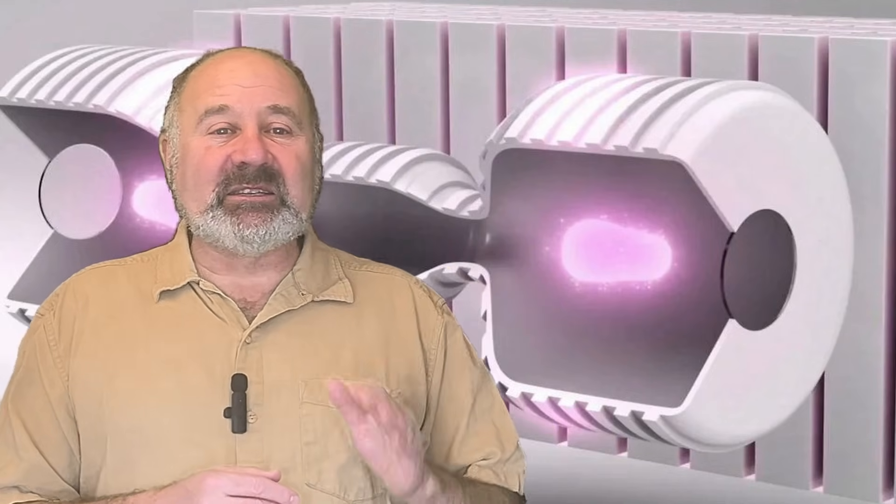So let's look at Helion's sixth prototype, Trenta, which ran from 2020 to 2022. They performed over 10,000 shots. For Trenta, they just used deuterium as fuel, as it's readily available and inexpensive, and it has a fairly high cross-section.